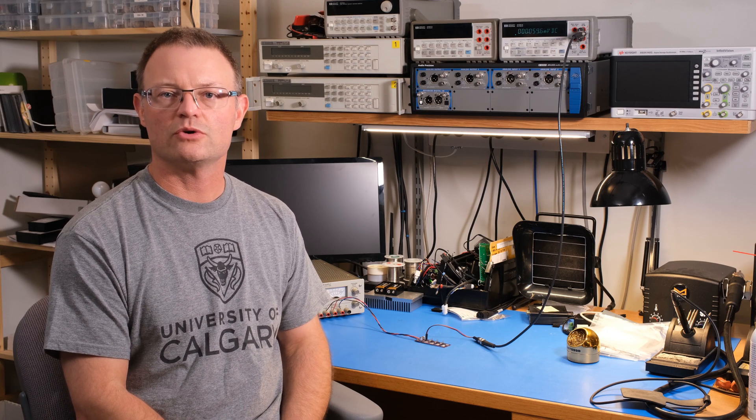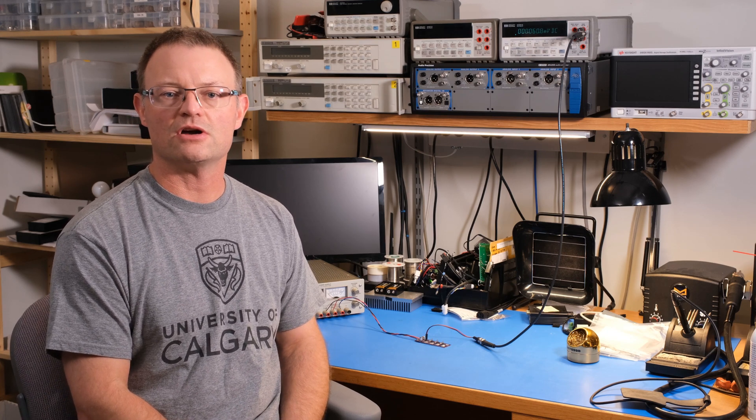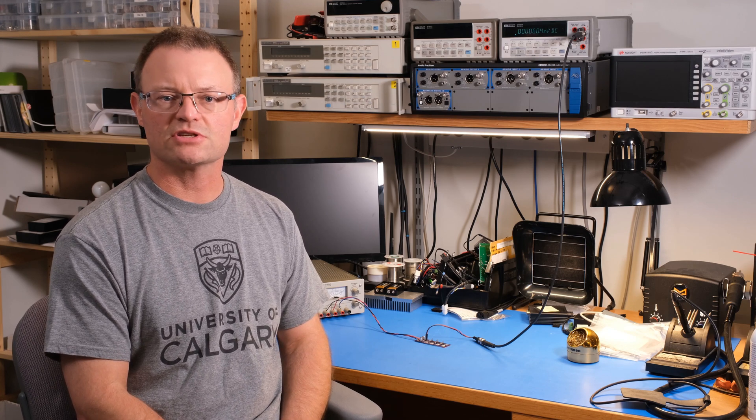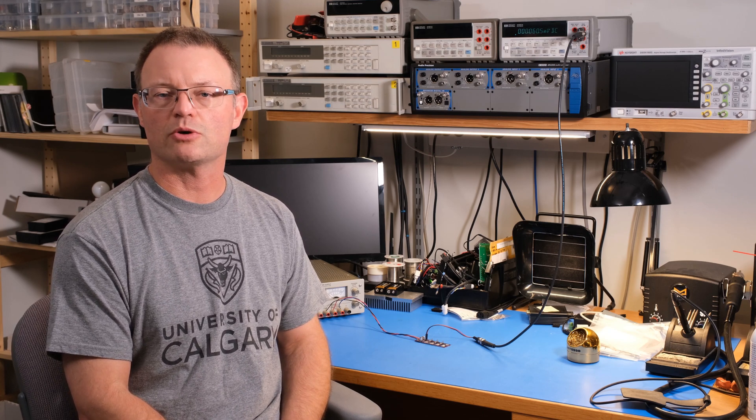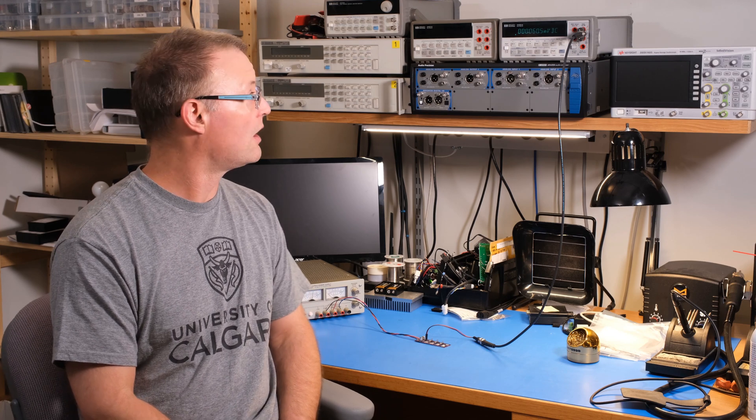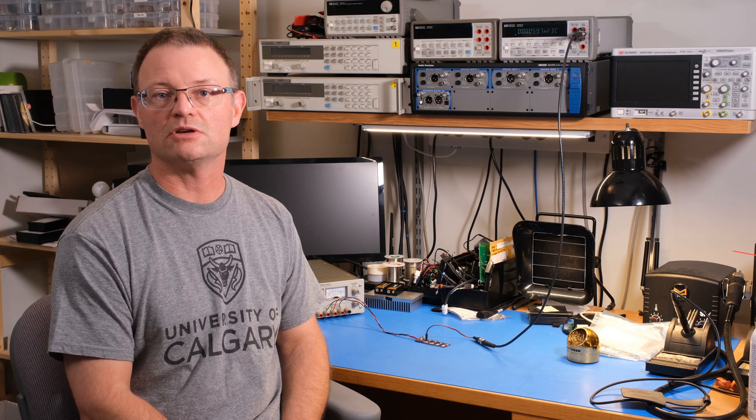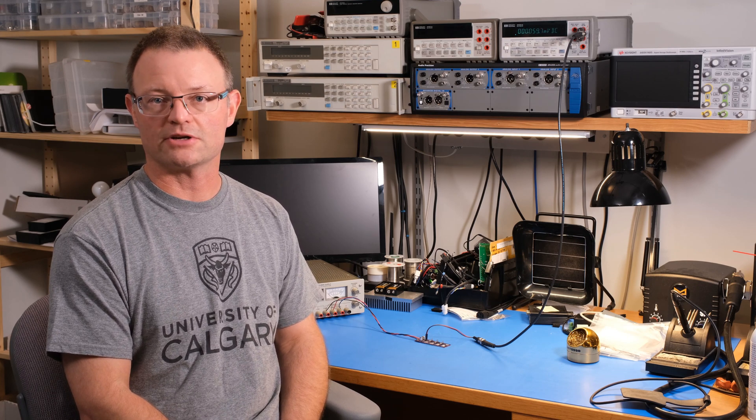So I have the voltmeter hooked up to the first circuit. That was the one that was soldered with the water soluble flux. And previously that measured minus 3.13 millivolts. Now it measures 16 microvolts. So that's a factor of 50 improvement just by cleaning the flux off.